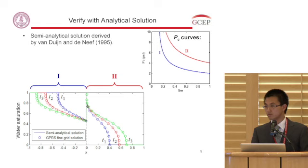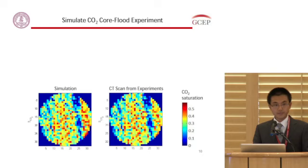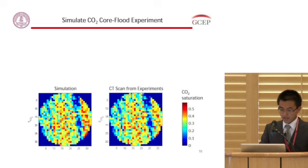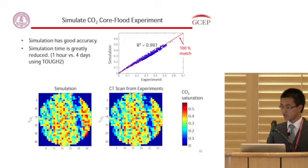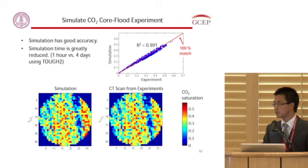Here I show some results: the CO2 saturation distribution map from an arbitrary cross-section across the core, comparing simulation results versus CT scanning results from the experiment. Please pay attention to the pattern of how CO2 is distributed inside the core and the value of CO2 saturation depicted by colors. Comparing these two plots, they match each other pretty well, and when plotted together the correlation is indeed very good. This tells us our simulation has very good accuracy — it captures both the pattern and value of CO2 saturation distribution consistent with the physics.